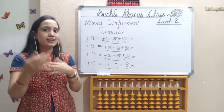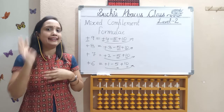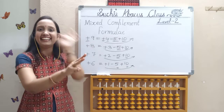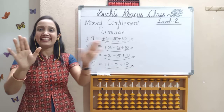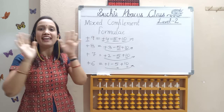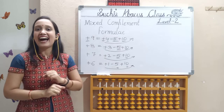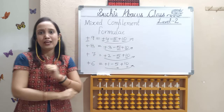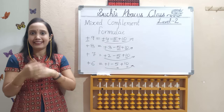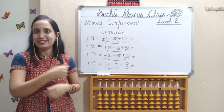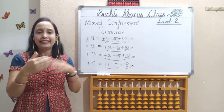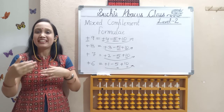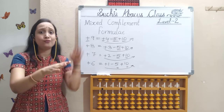If you do it fast: add 9 — add 4, less 5, add 10. Add 8 — add 3, less 5, add 10. Add 7 — add 2, less 5, add 10. Add 6 — add 1, less 5, add 10. I think you are enjoying this formula — till the next video, just practice this.